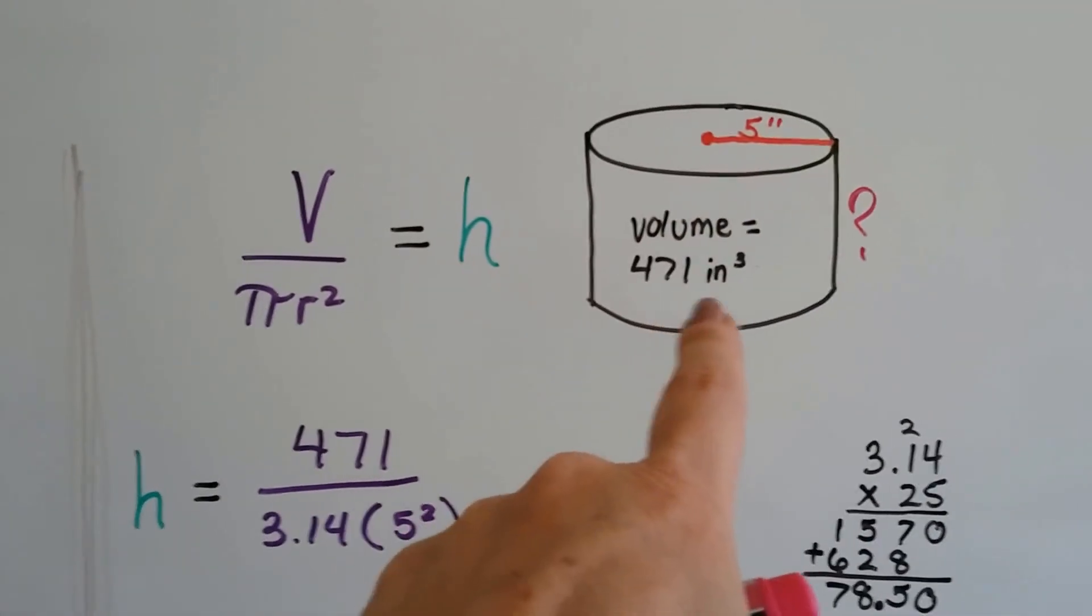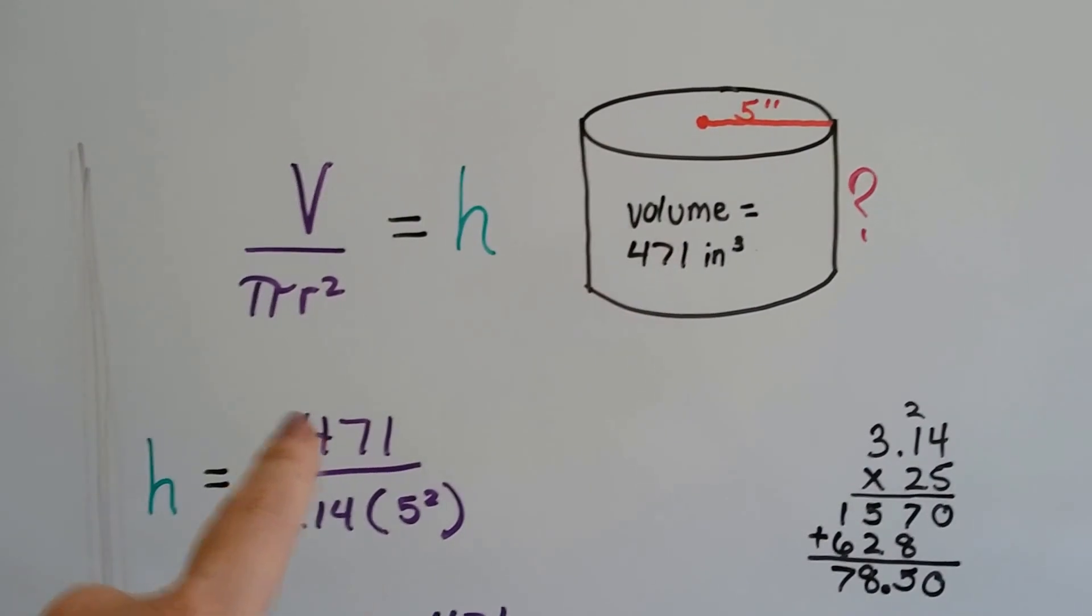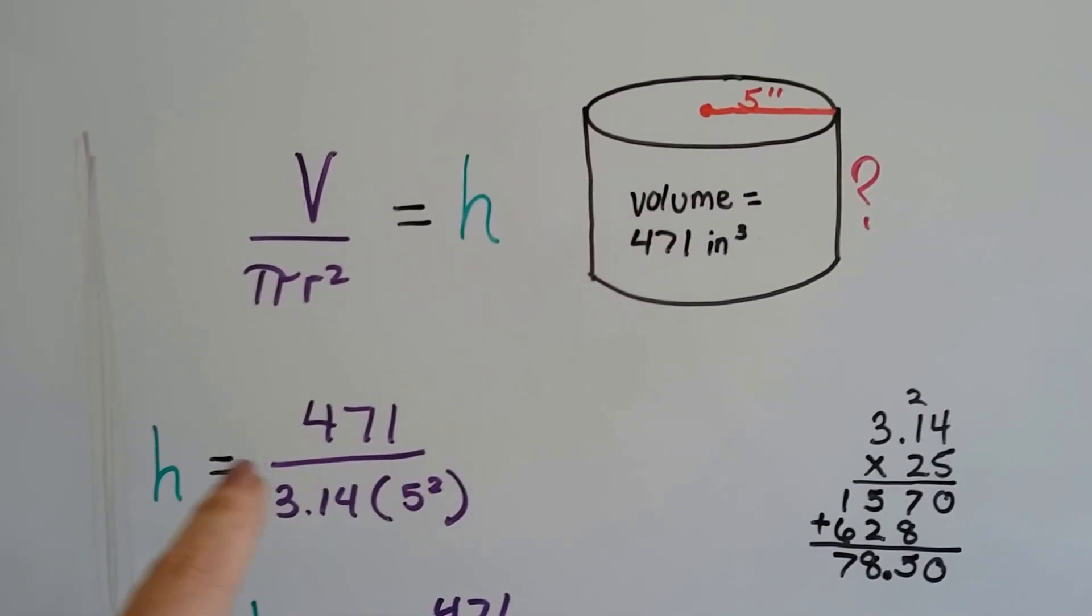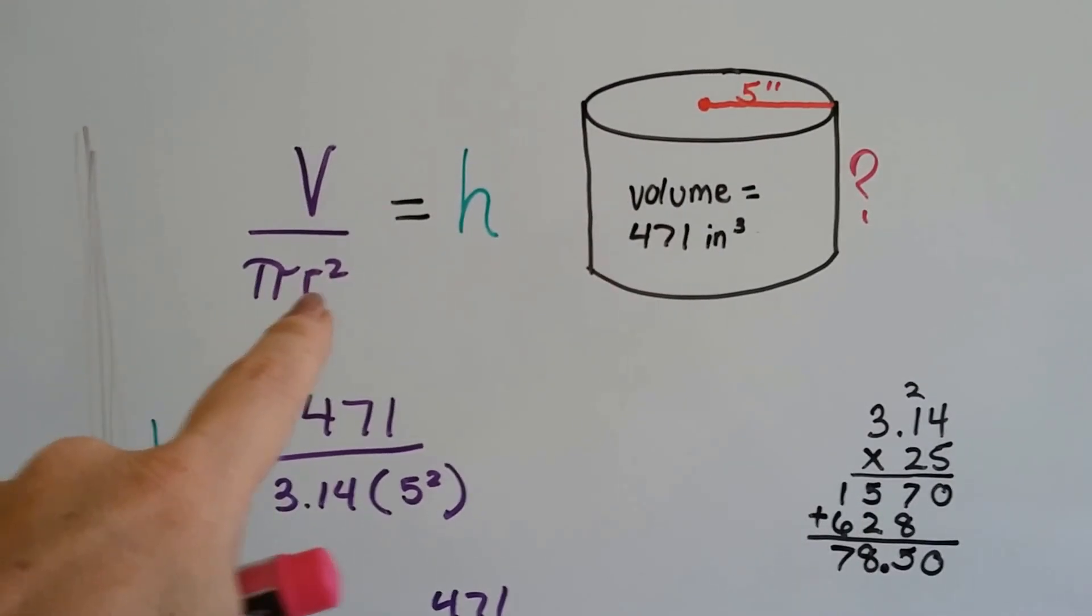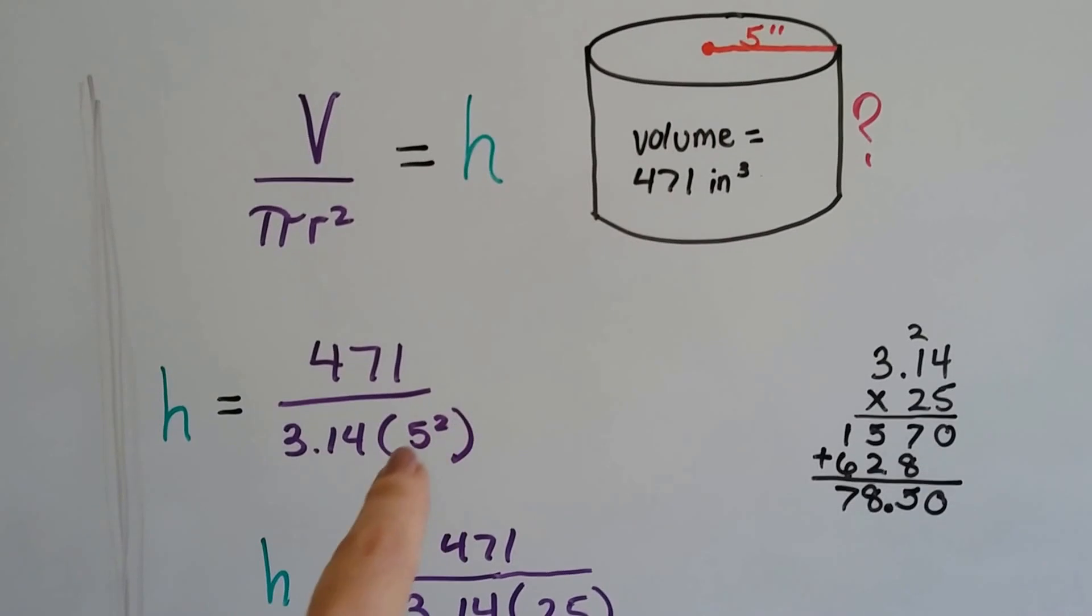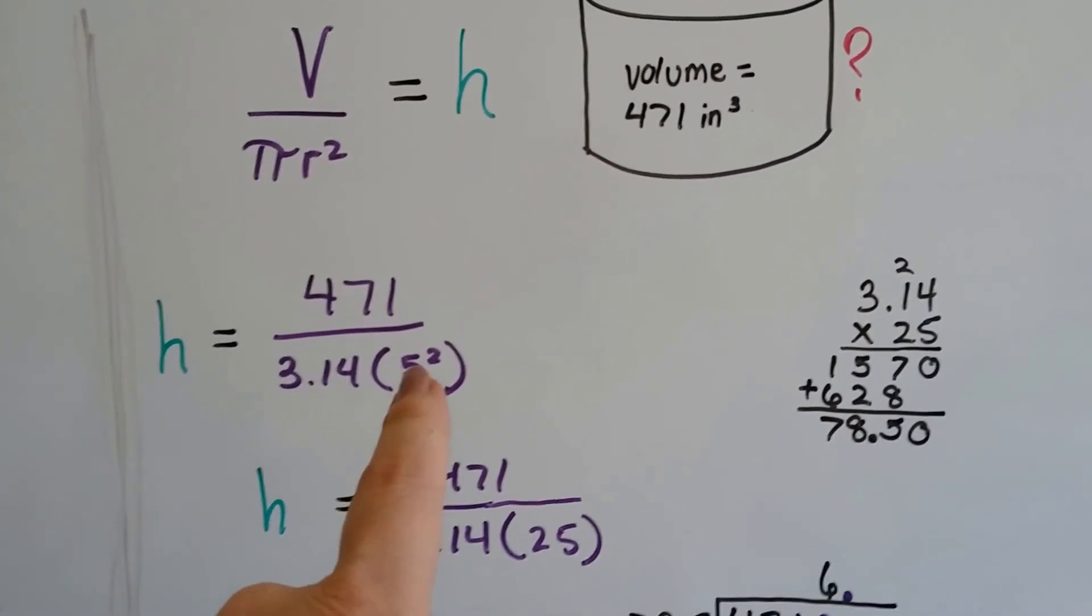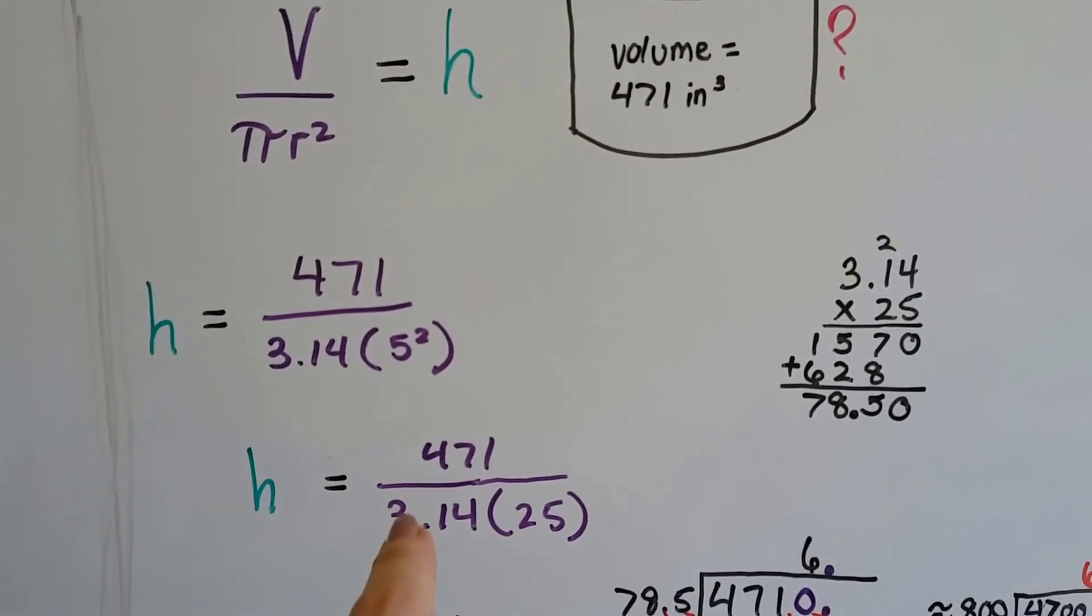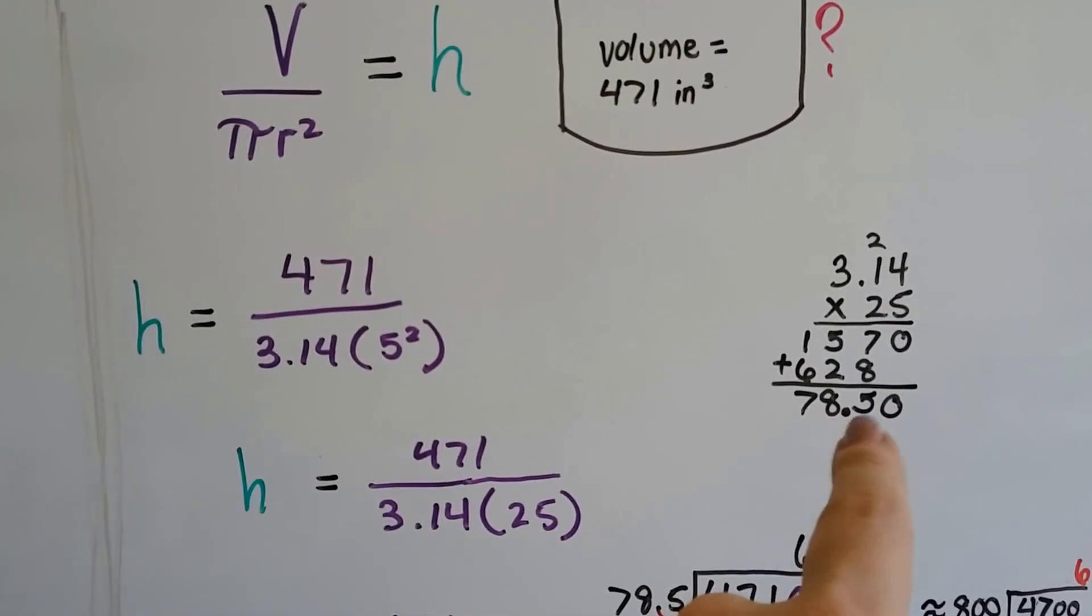If the volume is 471 inches cubed, we put the 471 right here, and we divide it by π, 3.14, times the radius squared. And the radius is 5 inches, so that's 5 squared. So this is 25, 5 times 5 is 25. And when we do 3.14 times 25, a little math on the side, we get 78.5.